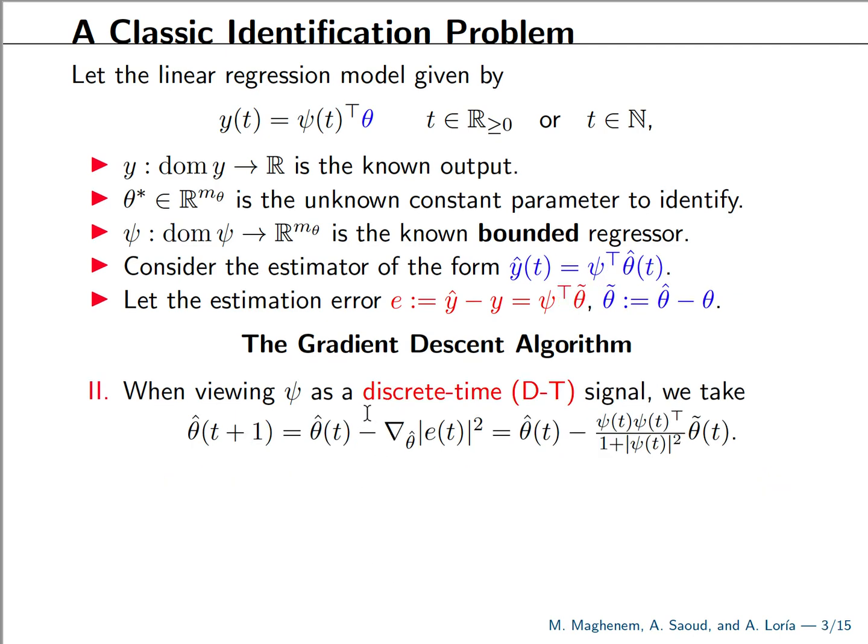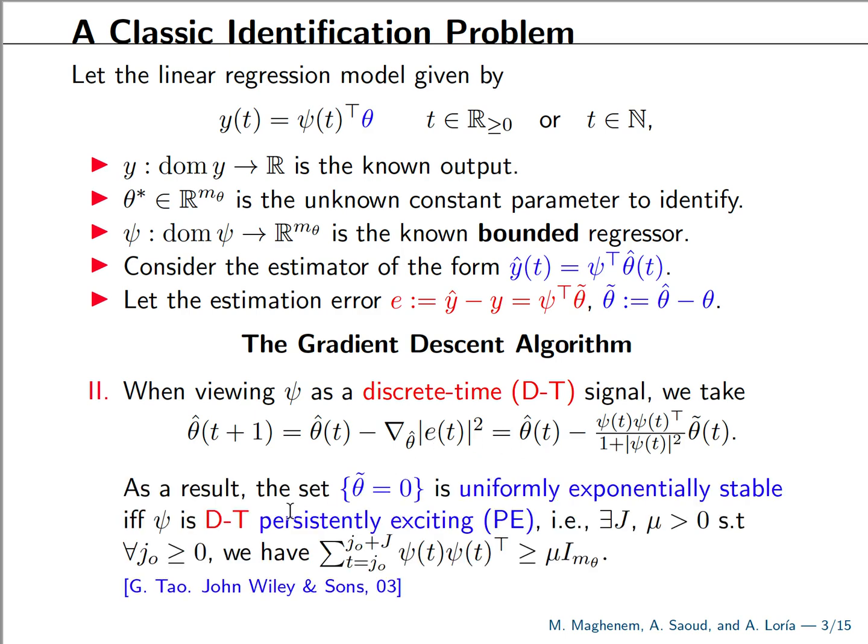Similarly, if we view our regressor signal as a discrete time signal, we can update our unknown parameter or the estimate of the unknown parameter using this discrete time gradient-based update law. And we know that we achieve parametric estimation exponentially fast if and only if the discrete time regressor verifies the discrete time persistence of excitation condition that is given here.